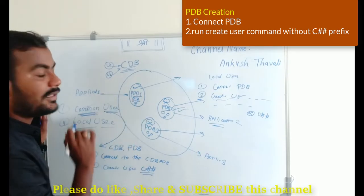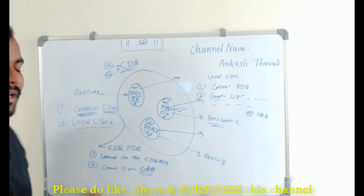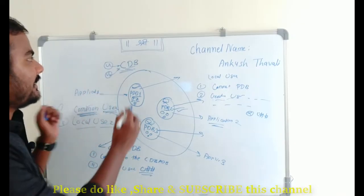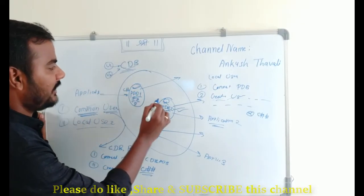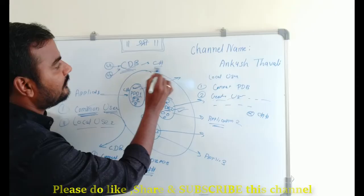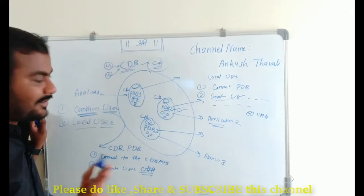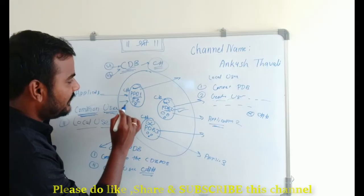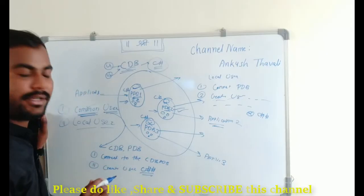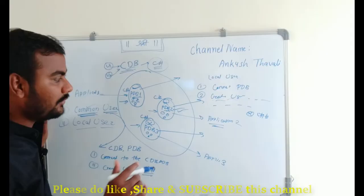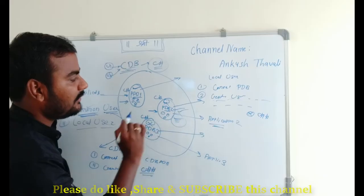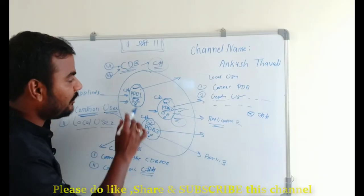If you connect to PDB1 and fire the query SELECT username FROM dba_users, you will find the C## users there as well. You will find them in PDB1, PDB2, and PDB3. But when talking about local users, you will only find the users related to that specific PDB. If you connect to PDB2, you will find only the users available inside PDB2, not those in PDB1 or PDB3.